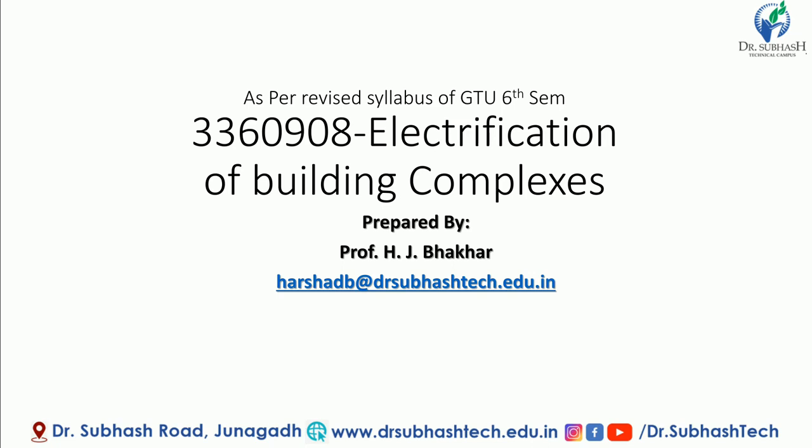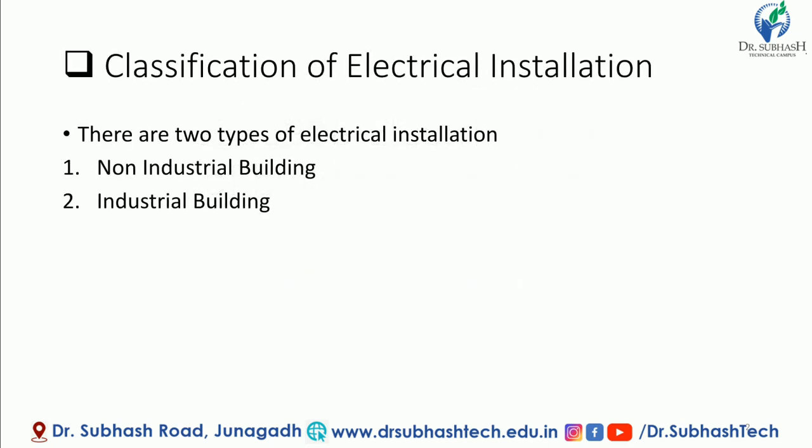Let's see the first chapter. We will see the classification of electrical installation. There are two types of electrical installation. First one is Non-Industrial Building. Second one is Industrial Building. The building which is used in industry is called Industrial Building. The building which is not used in industry is called Non-Industrial Building. Let's see each one by one.